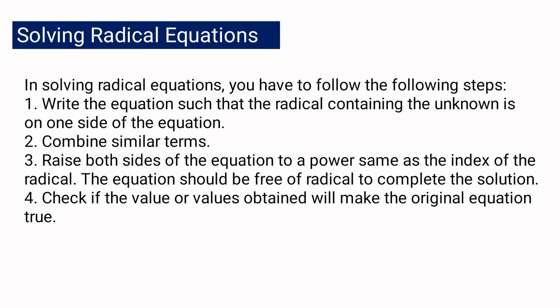In solving radical equations, you have to follow these steps. Number one, write the equation such that the radical containing the unknown is on one side of the equation. Second, combine similar terms before solving. Third, raise both sides of the equation to a power equal to the index of the radical — the equation should be free of radicals to complete the solution. And lastly, check if the value you obtain makes the original equation true.